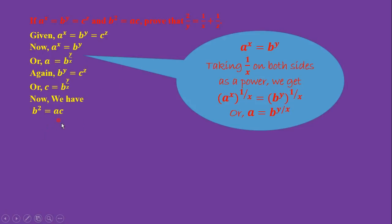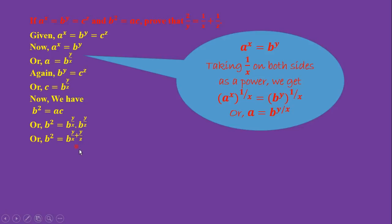We have B² = AC. Substituting, B² = B^(y/x) · B^(y/z), which means B² = B^(y/x + y/z). If you apply logarithm, 2 = y/x + y/z.